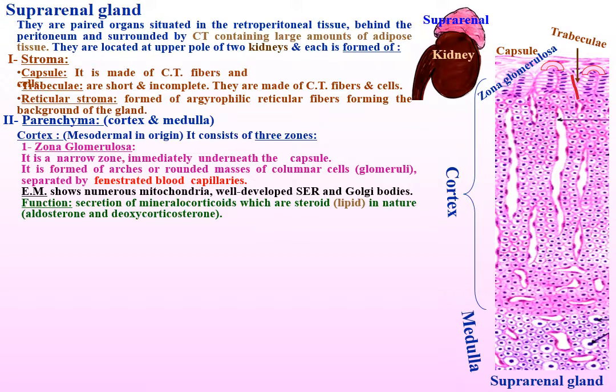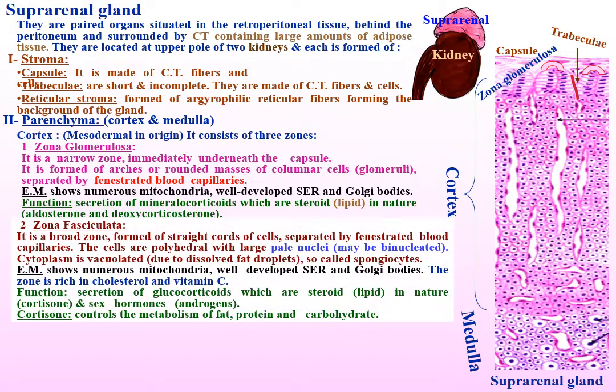By electron microscopy, the cells show numerous mitochondria, well-developed smooth endoplasmic reticulum and Golgi bodies. Function: secretion of mineralocorticoids, which are steroid and lipid in nature — aldosterone and deoxycorticosterone.